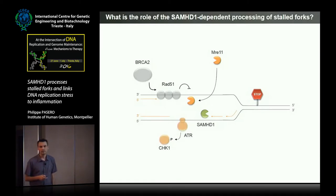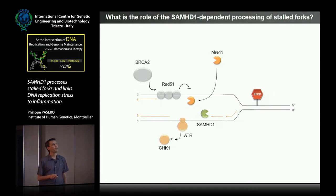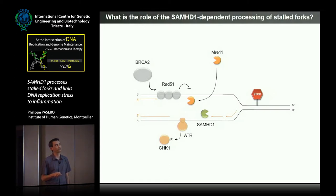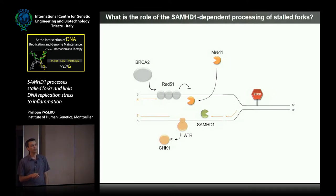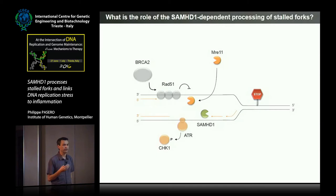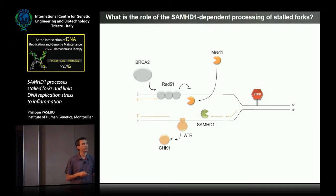We then asked what could be the function of degrading the fork with SAMHD1. It's important to activate the ATR-CHK1 pathway, and this activation depends on the presence of RPA-coated single-stranded DNA. If SAMHD1 is involved in the generation of single-stranded DNA behind the fork, then it might be important to activate the ATR-CHK1 pathway.